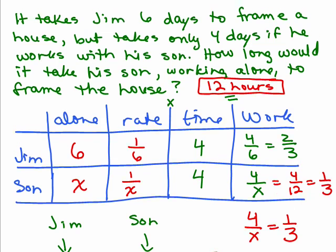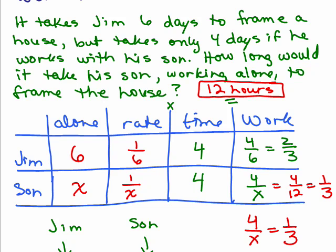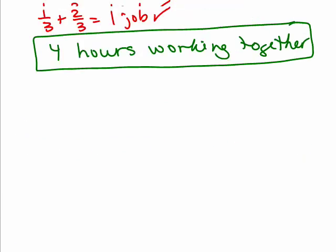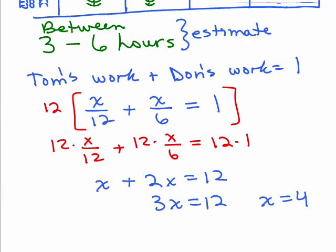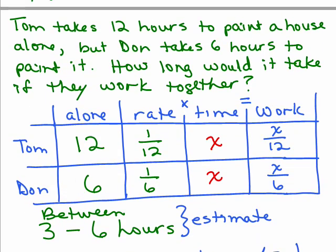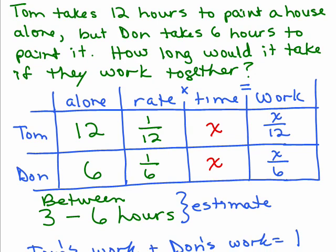If you watched my first word problem from a video, the first work video I made was exactly the same, except I told you that it took his son 12 hours and asked you how long they worked together. Check this out. We'll go back up. This was the word problem. Same problem, but I asked you a different question. I gave you different information. I said, Tom, you know, I did hours instead of days and I talked about Tom and Don instead of Jim and his son, said, Tom takes 12 hours, Don takes 6 hours, how long would it take if they worked together?